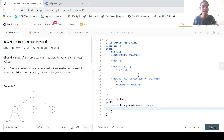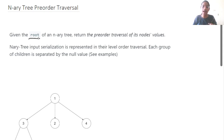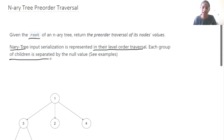Coming back to N-ary tree pre-order traversal. I have copied the question, so let us move to the whiteboard. Here, we are given the root of an N-ary tree. An N-ary tree node can have 0 to N number of children — it can have 2, 3, 4, or N children, where N can be any integer. The tree is represented in level order traversal, and each group of children is separated by a null value.